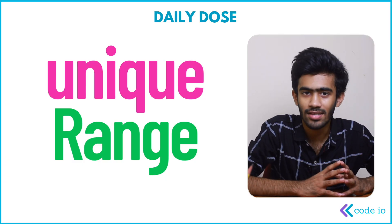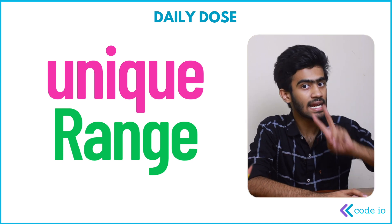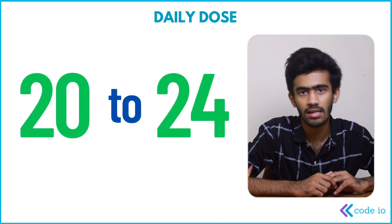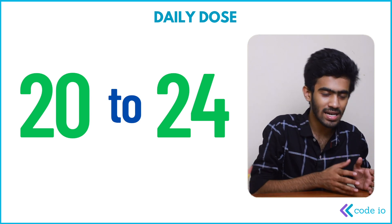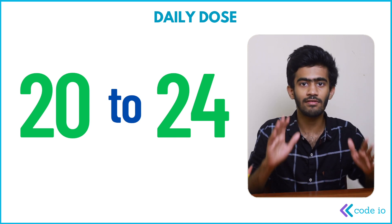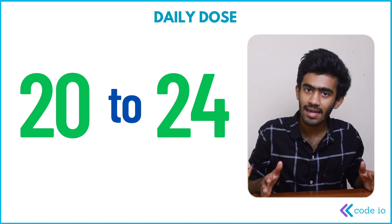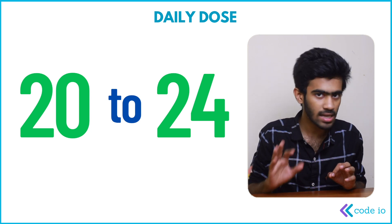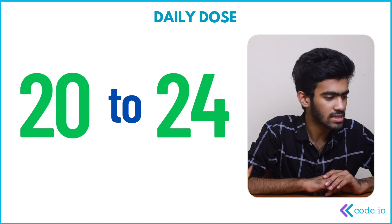The question is 'Unique Range.' That's what the question is. So here we have two integer inputs — 20 and 24. We have two numbers in that range. What numbers are unique? That's what we print. That's the interview question.